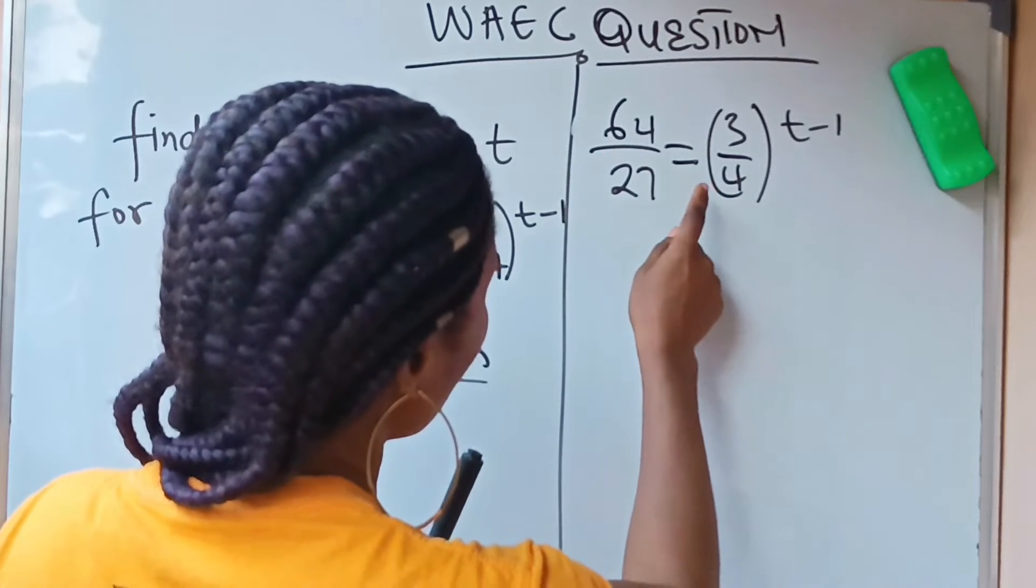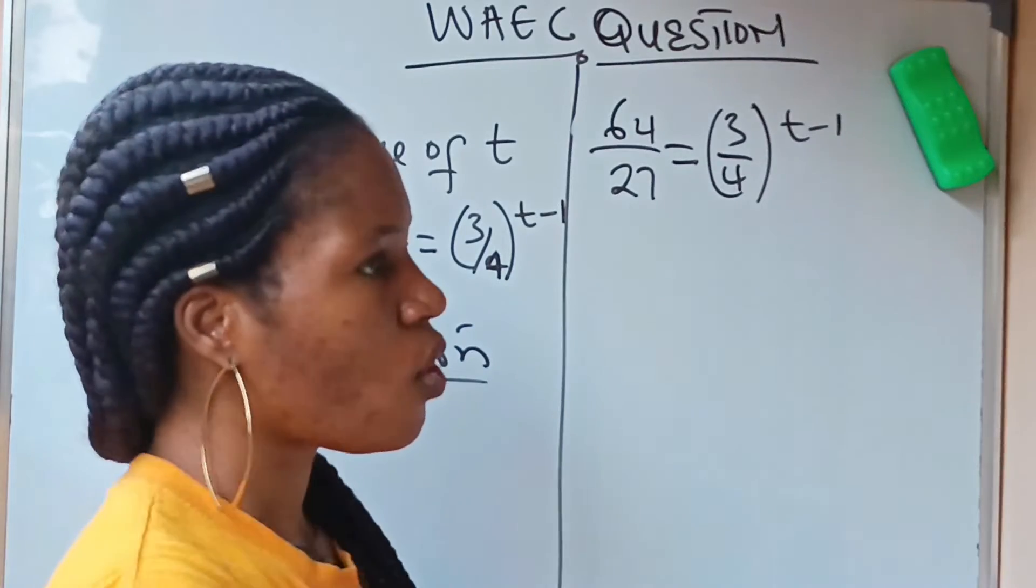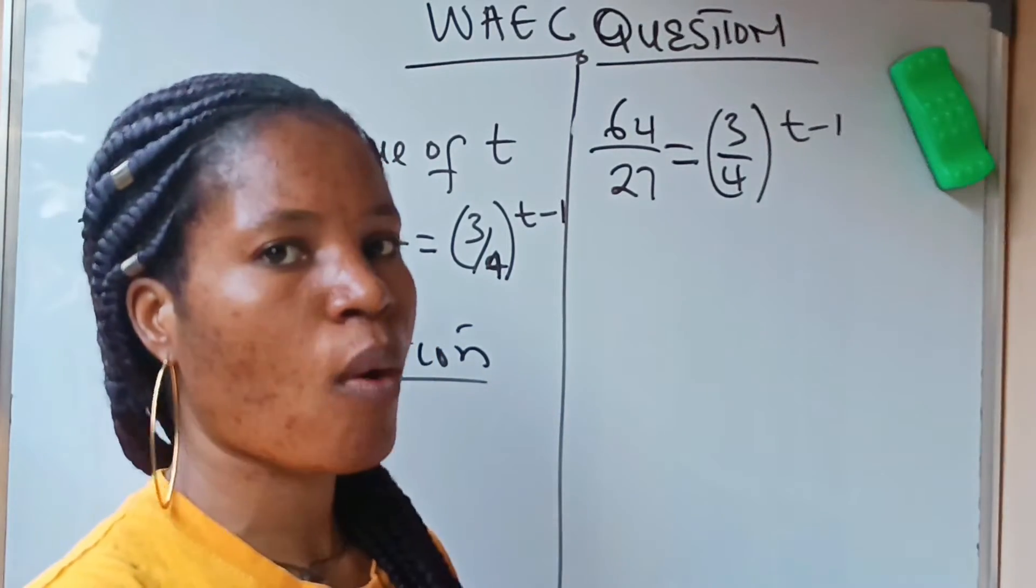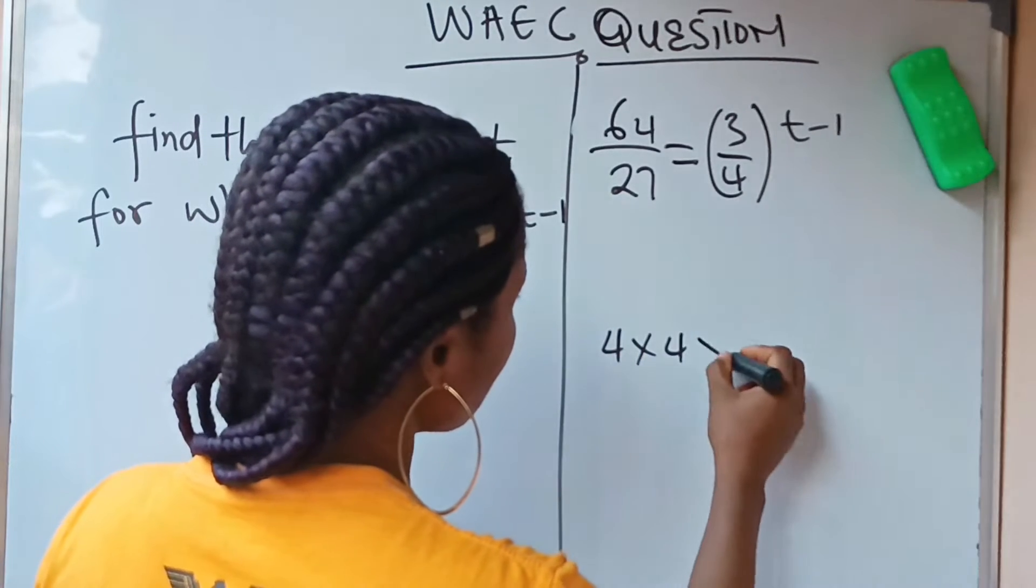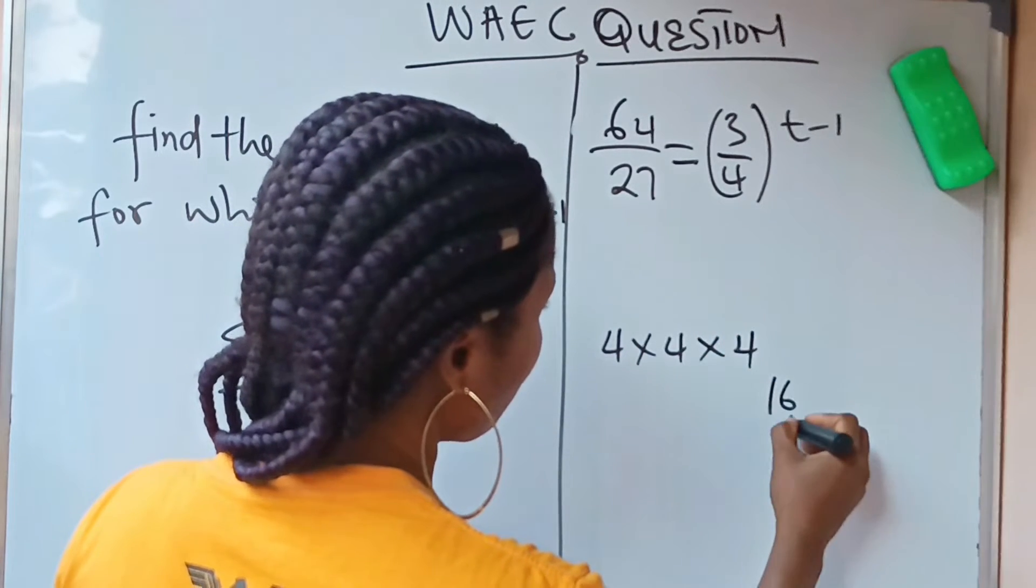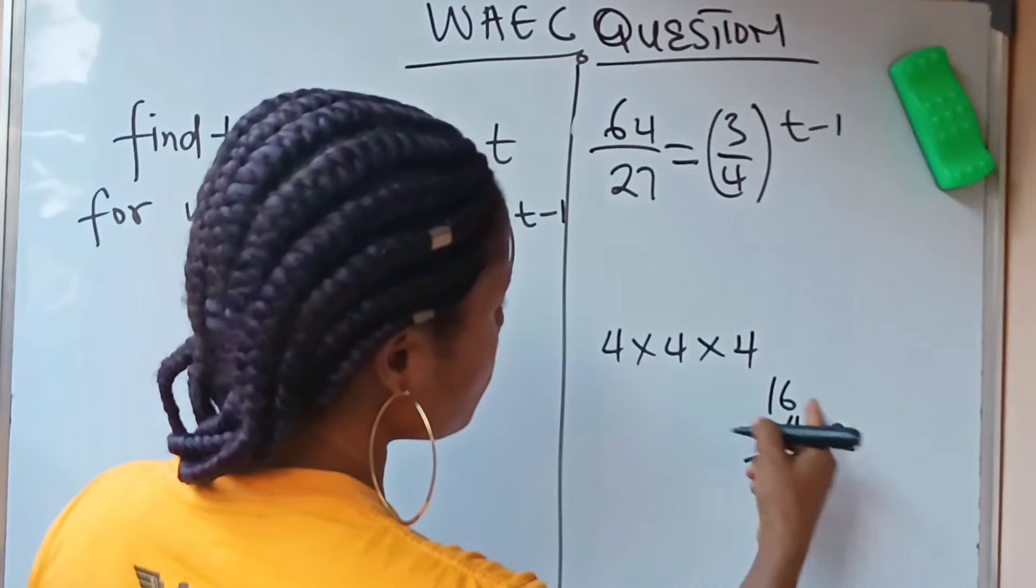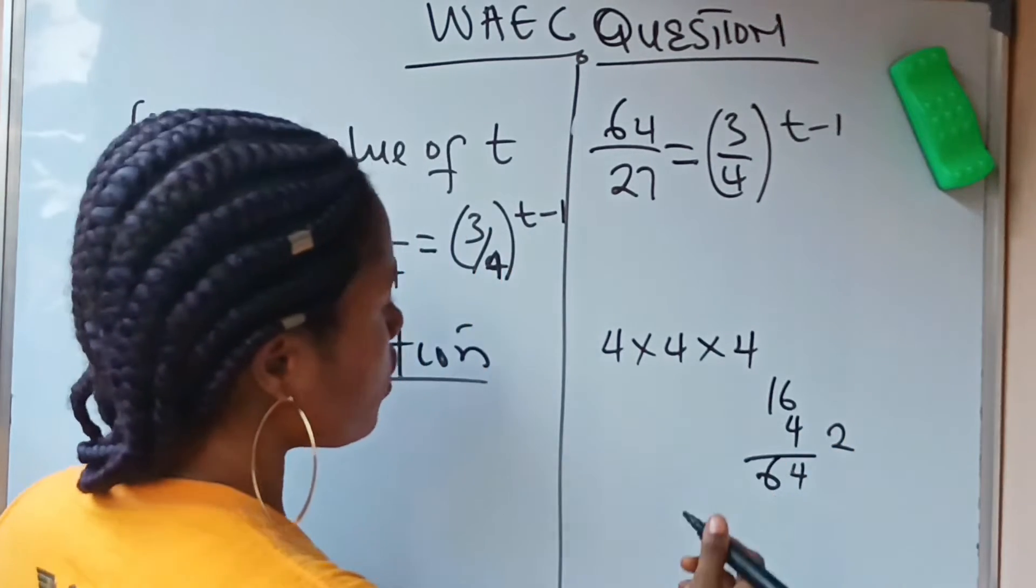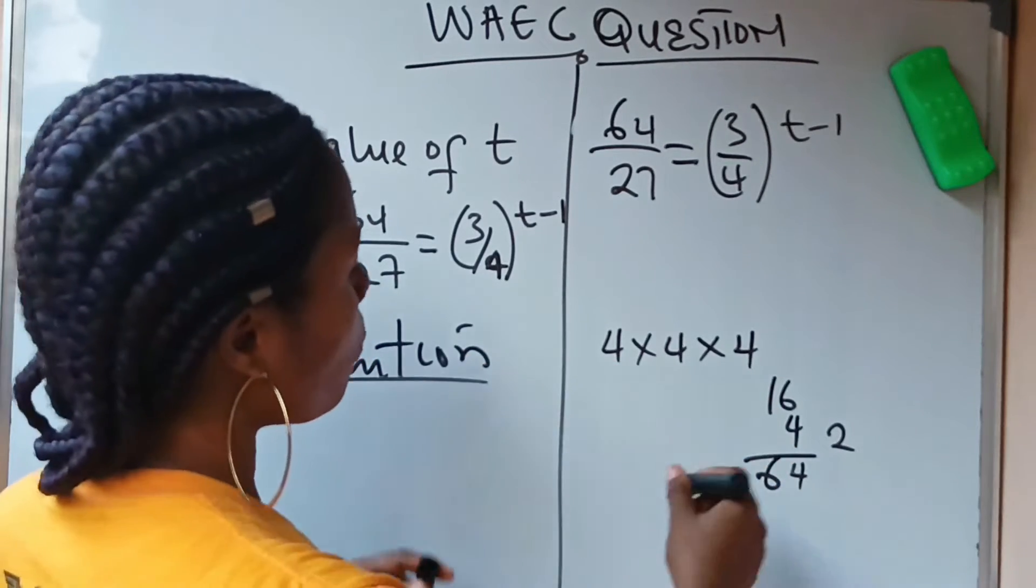What can we do? What is raised to the power of 4 to give us 64, or raised to the power of 3 to give us 64? You can say that 4 raised to the power of 3 is 64. Let's check: 4 times 4 is 16, 16 times 4, 4 times 6 is 24, 4 times 1 is 4 plus 2 is 6. So you see that 4 raised to the power of 3 will give us 64.